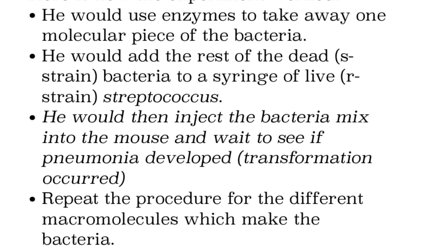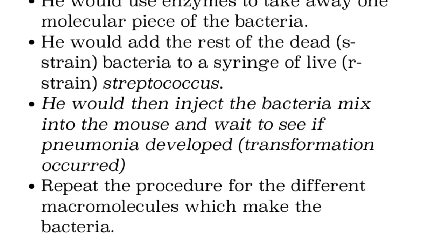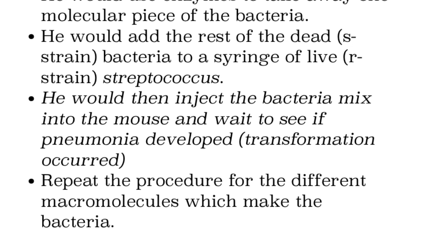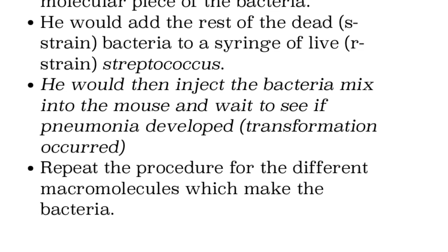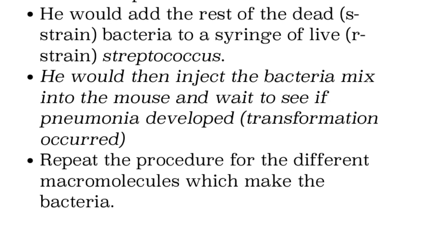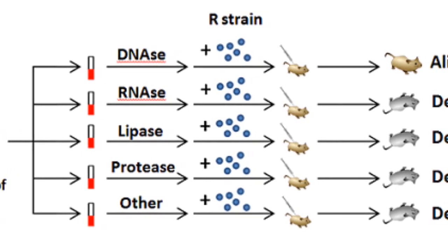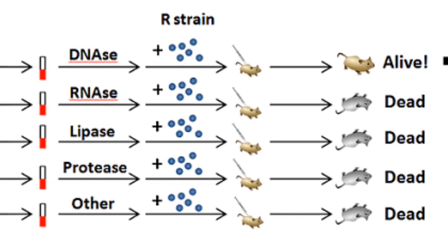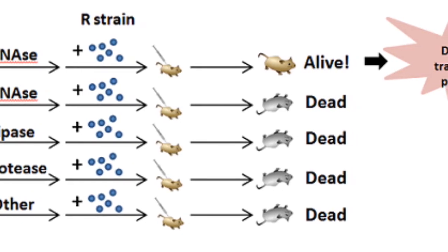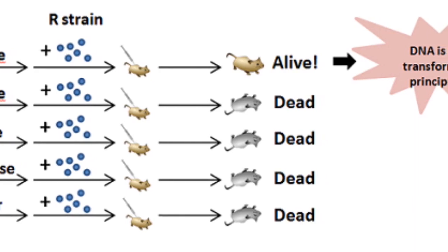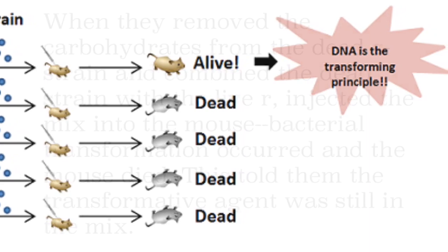Here's how the experiment worked. Avery would use enzymes to remove one kind of macromolecule at a time, then add the rest of the dead S-strain to some live R-strain, put that into a mouse, and wait to see if pneumonia developed — exactly what Griffith did. He did Griffith's experiment minus one macromolecule each time. If transformation still happened, he knew he had not removed the transformative agent, so he would take something else out, continuing until each component had been eliminated.